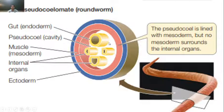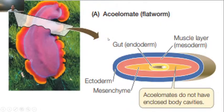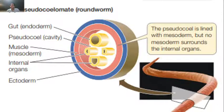In true coelomates, there is a membrane around the organs as well. The body cavity in pseudocoelomates is known as pseudocoelom. In the diagram we can see the blue ectoderm, pink muscle layer, and the endoderm. The cavity exists but it is mesoderm only on the outside, not lining the internal organs. So this is the difference — the cavity in nematodes is the pseudocoelom, not the true coelom.